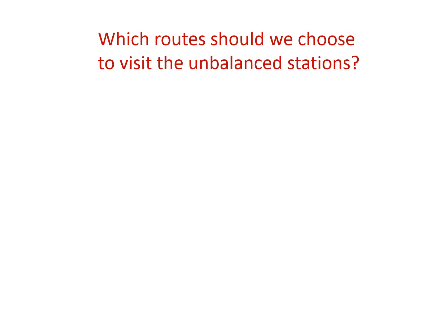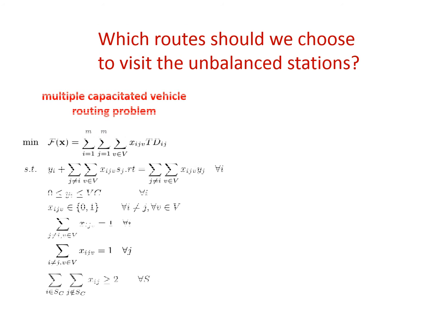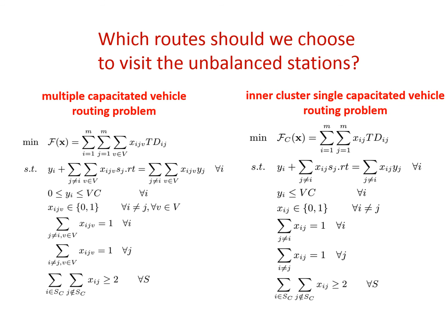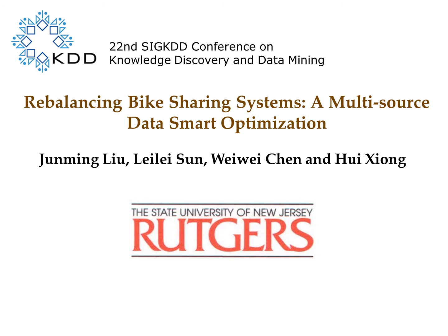The final route selection problem is actually a multiple-capacitated vehicle routing optimization problem. The clustering process has reduced this problem to an inner-cluster single vehicle problem, which is solvable by the Groovy optimizer. Thank you very much. More details can be found in our paper.